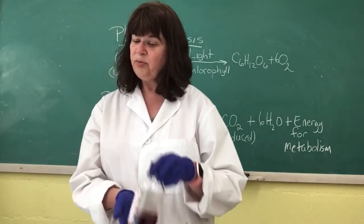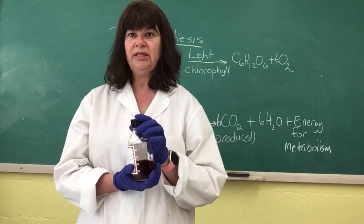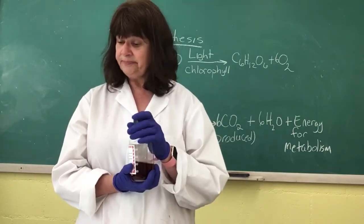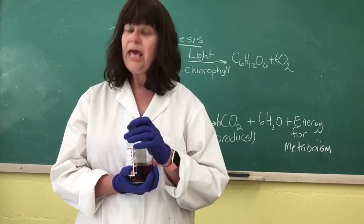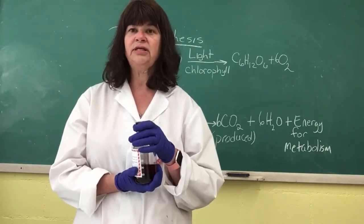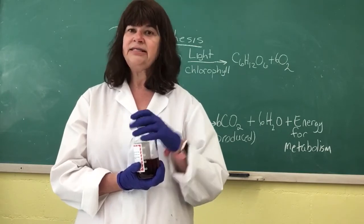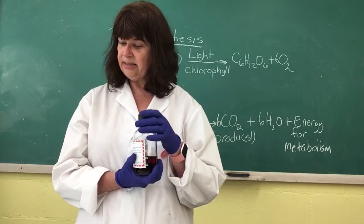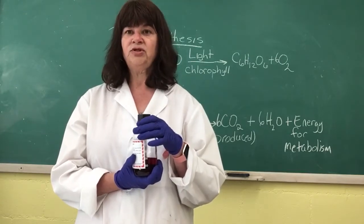In exercise one, we use a color change in bicarbonate indicator to look at two problems. One is how is the concentration of CO2 altered by autotrophs in darkness? And the second problem is how is the concentration of carbon dioxide altered by autotrophs in strong light?